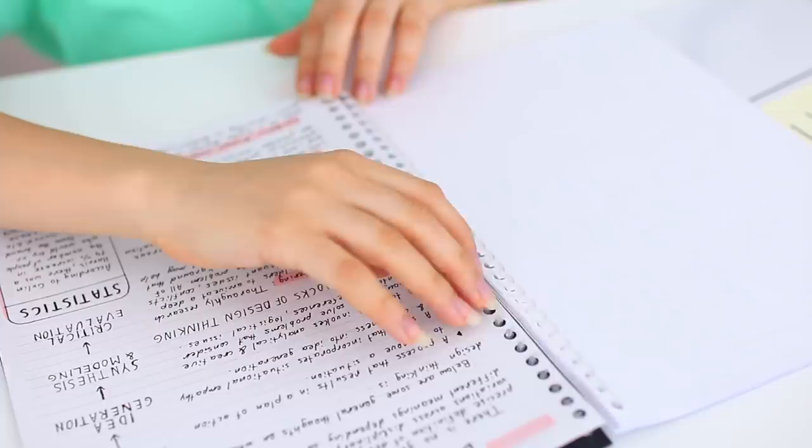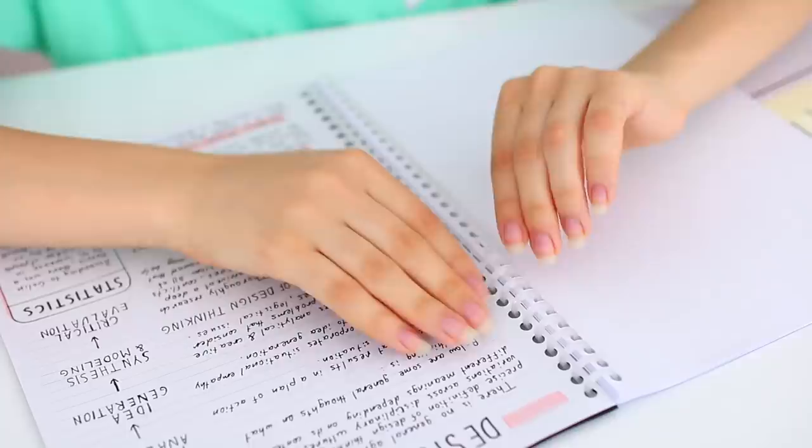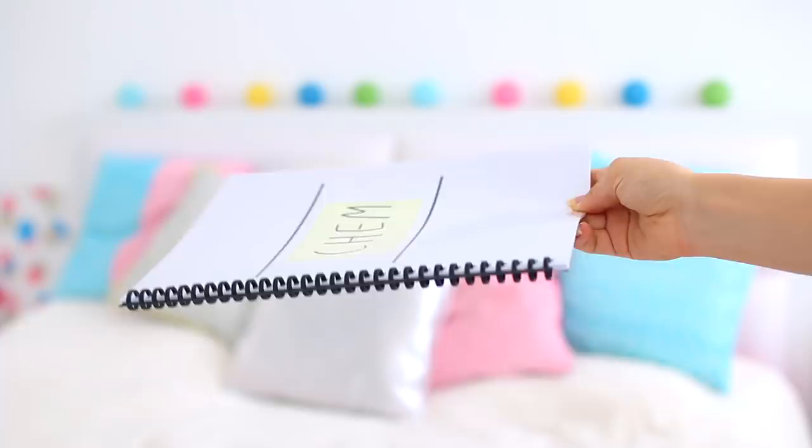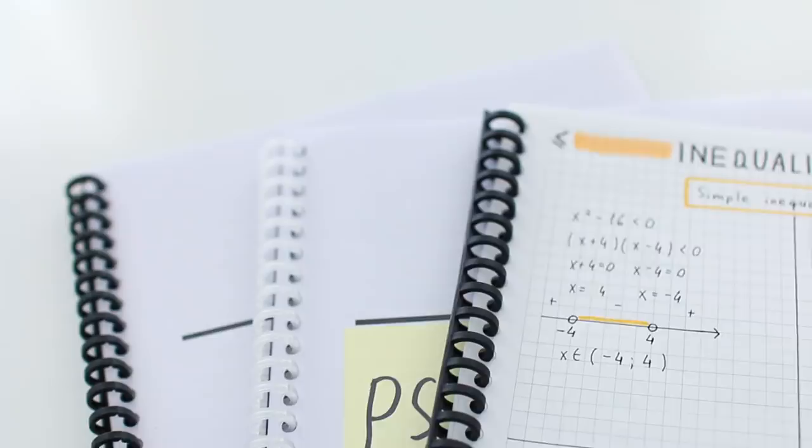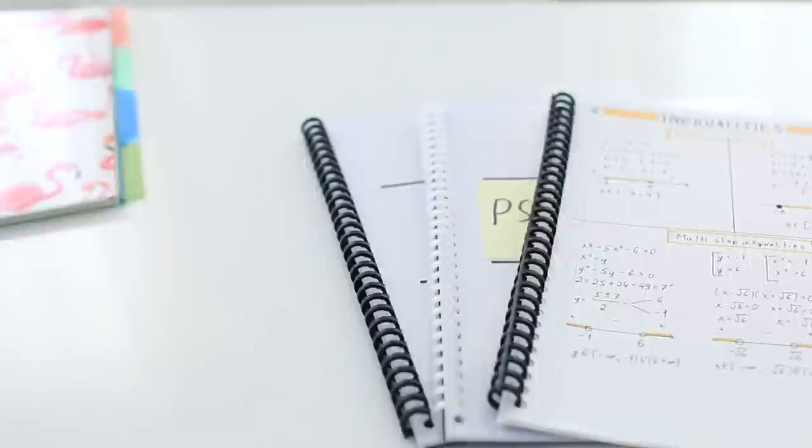Every single time there's a new chapter or topic I need to add, I'm able to easily open up the rings, add the pages, and then close them again. The cool thing about this is that if any of my teachers require a notebook for the class, I'm easily able to show them that I have a notebook for that class even though this notebook contains loose leaf paper.